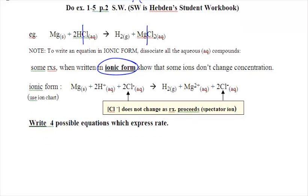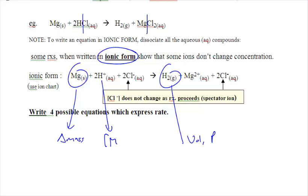So you have to figure out what is actually changing. The solid is going down, so you can calculate the change in mass. H2 gas is increasing, so there is going to be a volume or a pressure. The H+ is a concentration in molarity, so you can do change in concentration of H+. Here is another concentration, an ion that is aqueous. You can do a change in concentration, again, molarity.